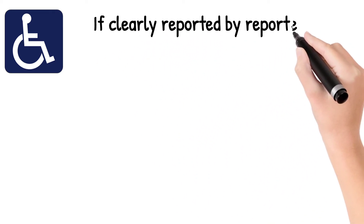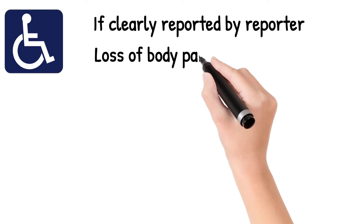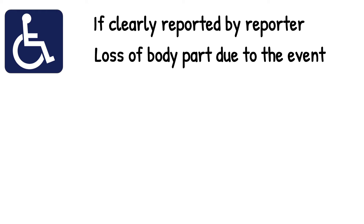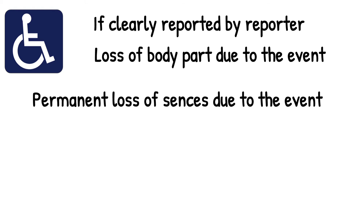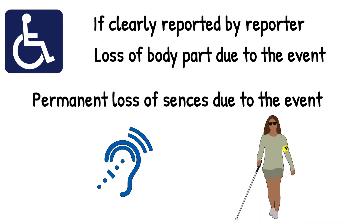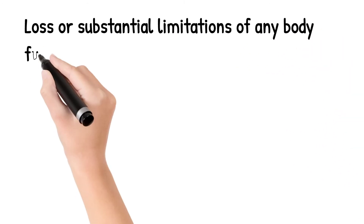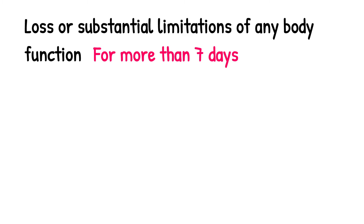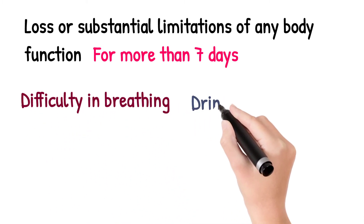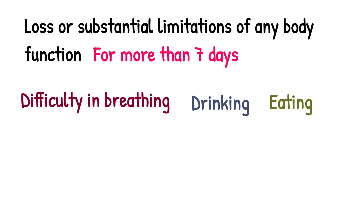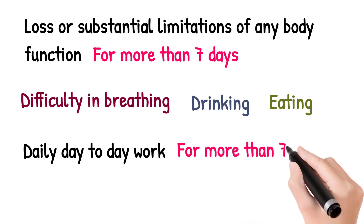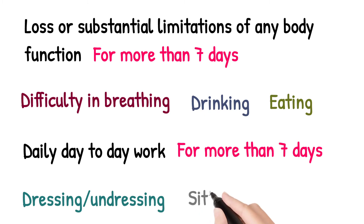Now let's move to the fourth seriousness criteria, which is disability. Disability should be considered as a seriousness criteria if the seriousness of the event is clearly reported as disability by the reporter, or if the patient loses any body part due to the event, or if the patient permanently loses the senses — for example, the patient loses the ability to hear or loses their eyes due to the event. Additionally, loss or substantial limitation of any body function for more than seven days also falls under disability, including difficulty in breathing, drinking, or eating. Disability also includes impairment of daily day-to-day work for more than seven days, such as being unable to dress, sit, or walk.